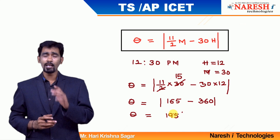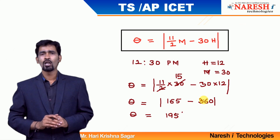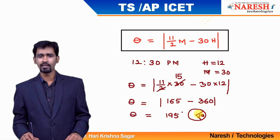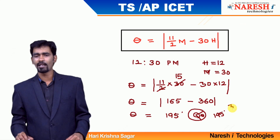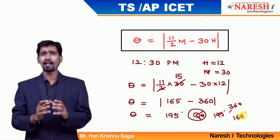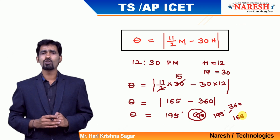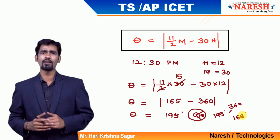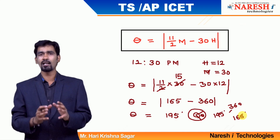If 195 is not available as an answer option, do not worry. In a clock, the sum of all angles is 360 degrees. If one angle is theta, the other angle is 360 minus theta. So 360 minus 195 gives 165. These two — 195 and 165 — are both possible angles. Mostly they will give the non-reflex angle, meaning less than 180 degrees. Give priority to the answer choice less than 180 degrees. If 195 is an option, go for it; if not, use 360 minus 195 equals 165. Both answer choices are correct.